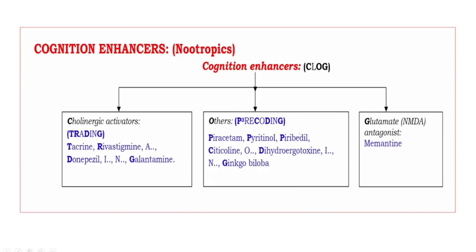Next, others — the mnemonic bold letters are P, P, P, C, D, G. First P means piracetam, second P means pyritinol, third P means piribedil. Next, C means citicoline, D means dihydroergotoxin, G means ginkgo biloba.